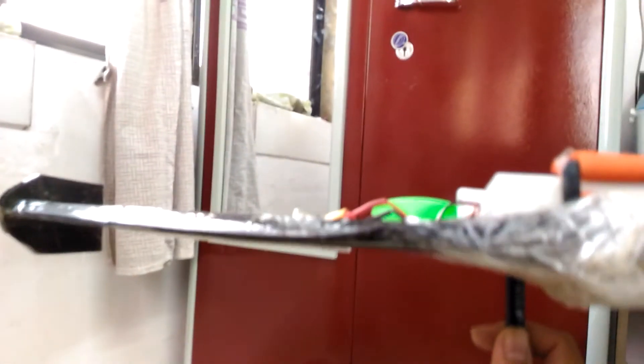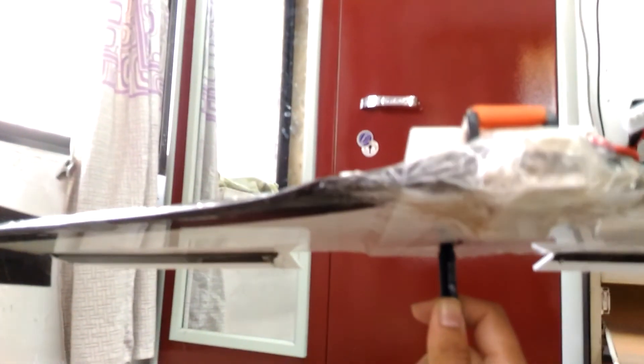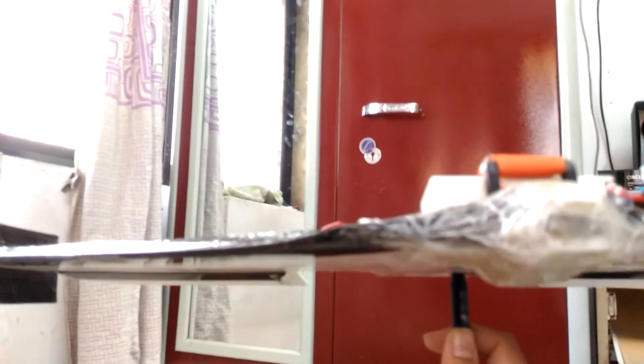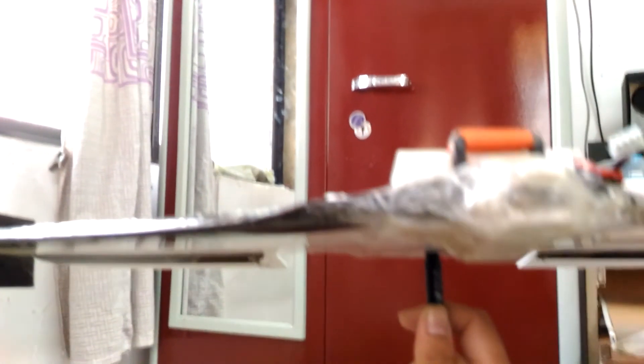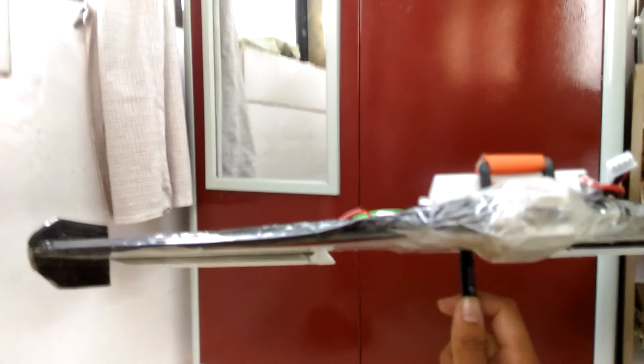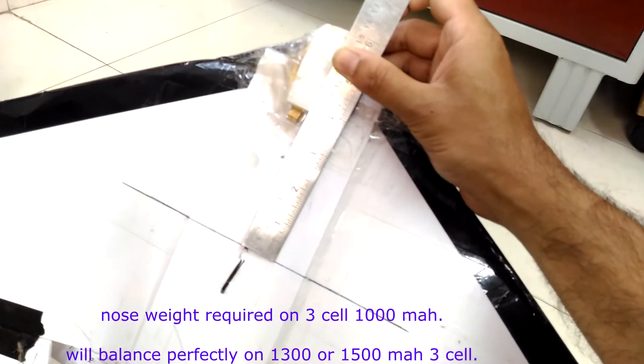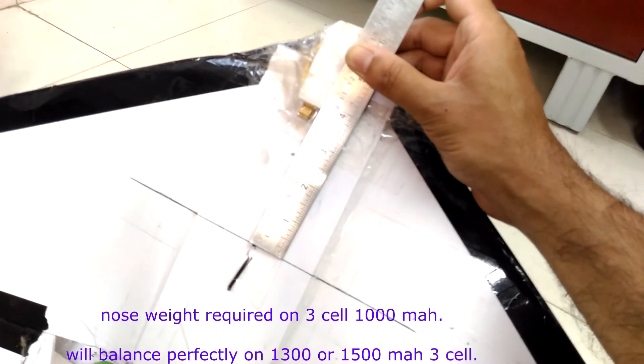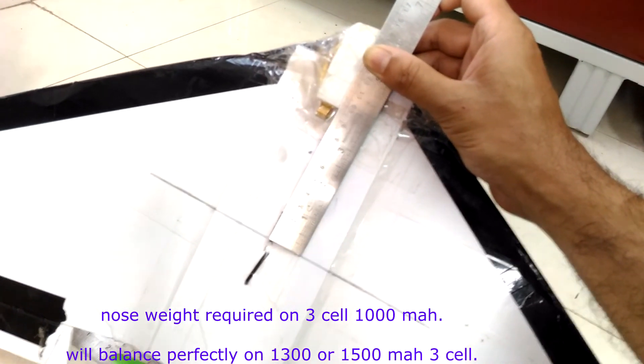So that is the CG of this wing, and it is just balancing perfectly on that mark. So that is the center of gravity for this wing. Nice! Oops, I dropped it. 15.7 centimeters or 157 millimeters. So that is the CG.